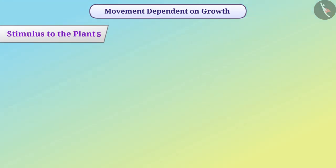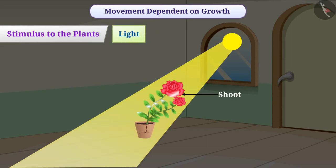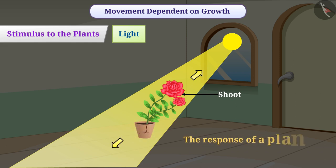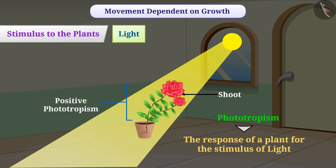Various environmental factors act as stimuli to plants. Light is a stimulus for plants. The shoot of the plant gives a response to light by growing towards it; however, the roots of the plant grow away from the light. The response of a plant to the stimulus of light is called phototropism. If any part of the plant grows towards light, we call it positive phototropism, and if any part grows away from the light, we call it negative phototropism.